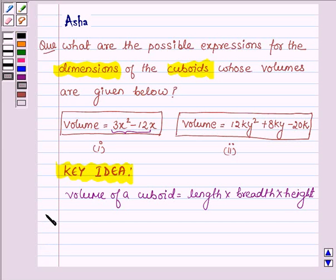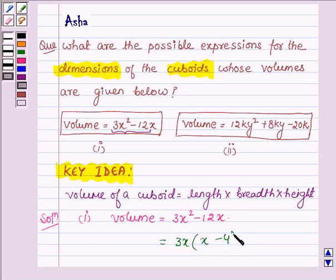Let us now start with the solution. The first one is volume = 3x² - 12x. Now 3x is the common factor in both terms, so taking it common we are left with x - 4.